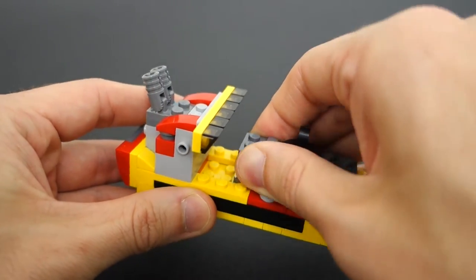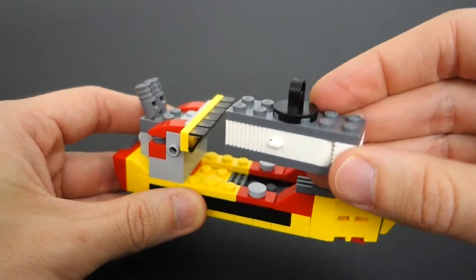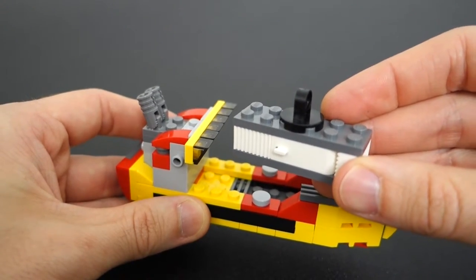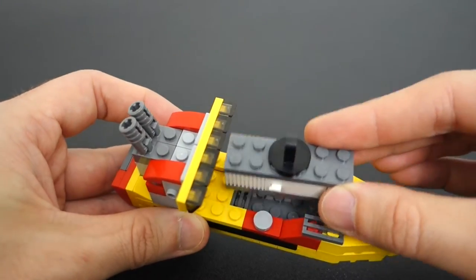The cargo box, and this actually comes out, you saw me build that separately, and this is the same cargo box that was used for the helicopter and that just kind of clicks in there.